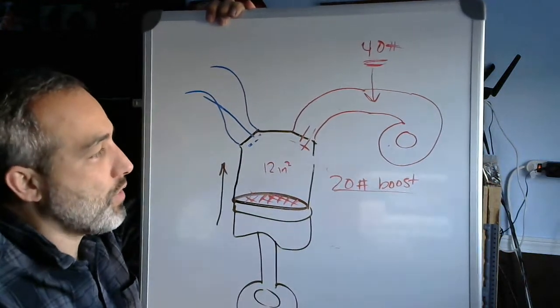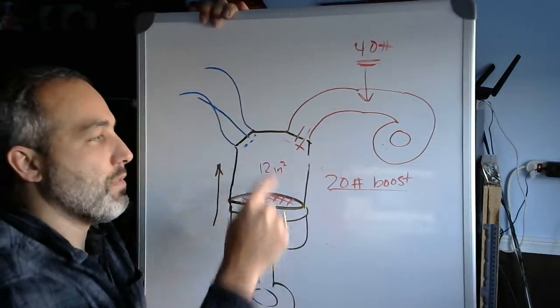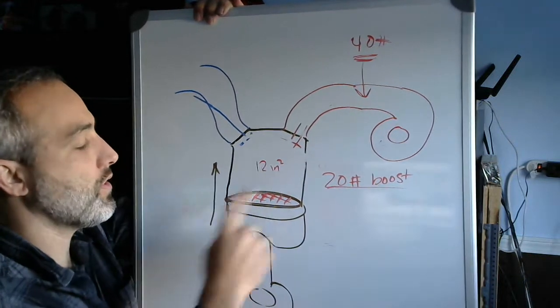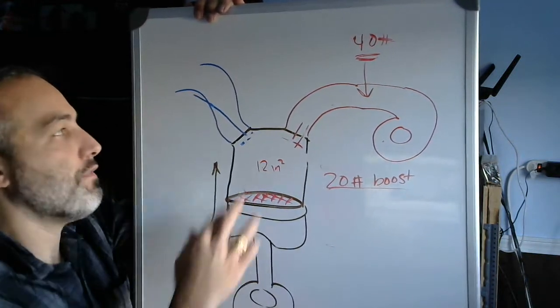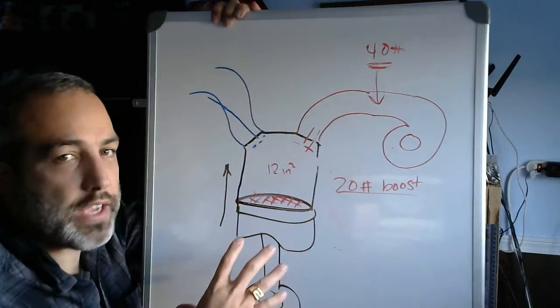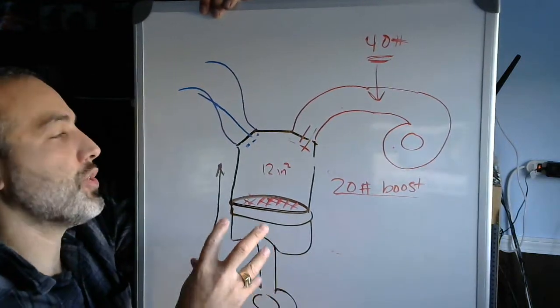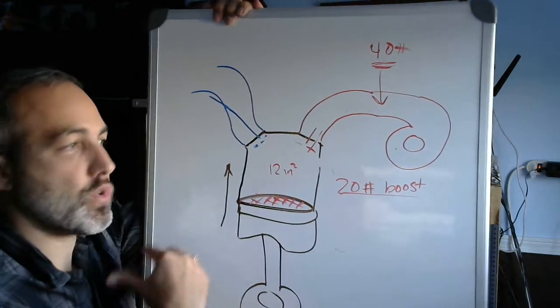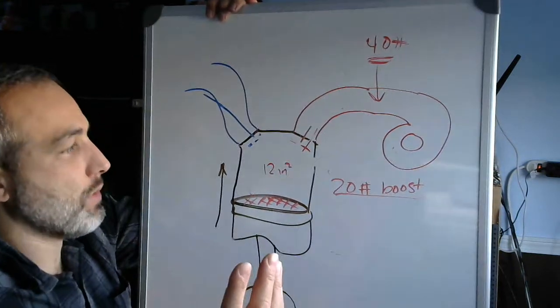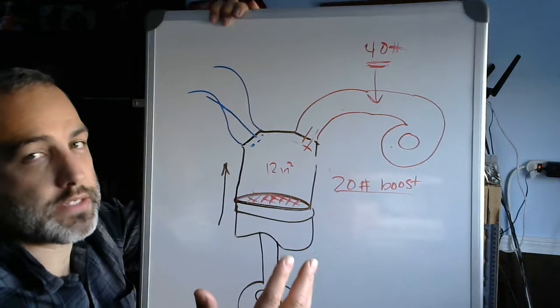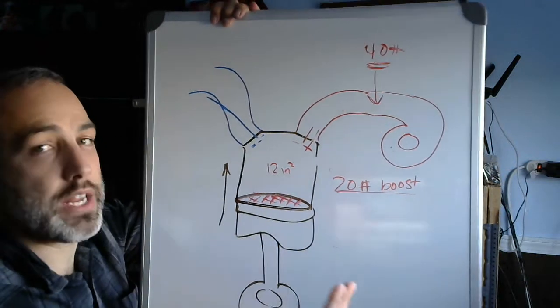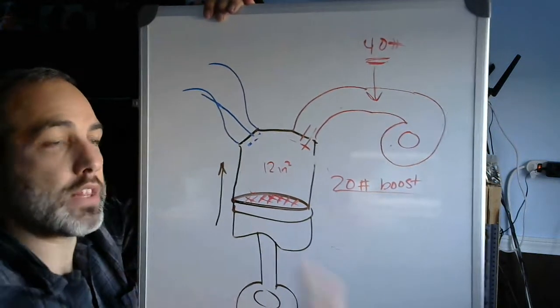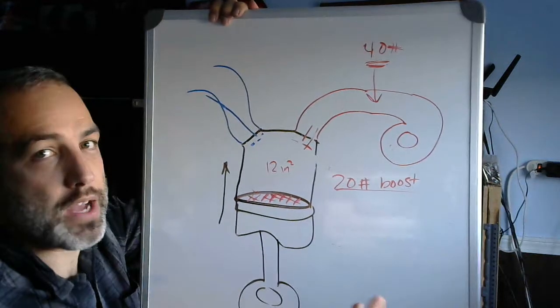And if you want to get fancy, you could get the combustion chamber volume and the piston dish volume, find out the volume of your port, and try and do some PV over T action to see how much mass is actually in there or how much volume you're occupying of the 40-pound air or the 20-pound air. But simple basic math is going to say that since pressure is on the top side of the equation, it's going to be directly proportional, which means that 40 instead of 20 means half as much.